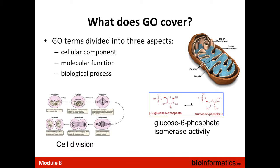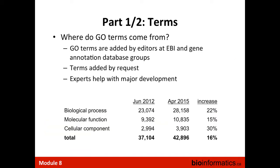What does GO cover? The Gene Ontology has three different branches: cellular component, molecular function, and biological process. Biological process is usually the most informative for pathway enrichment analysis because it covers cancer-related processes such as cell cycle, proliferation, and differentiation. The molecular function tree is more toward biochemistry, and cellular components are more difficult to interpret directly in the context of cancer.